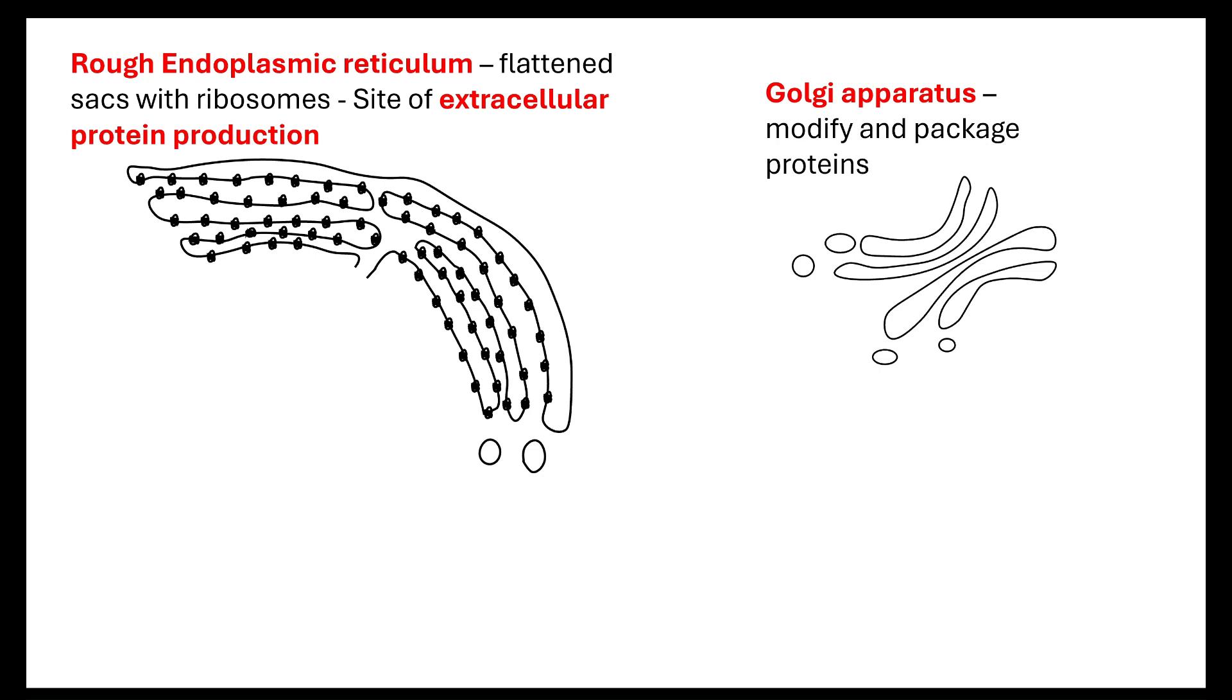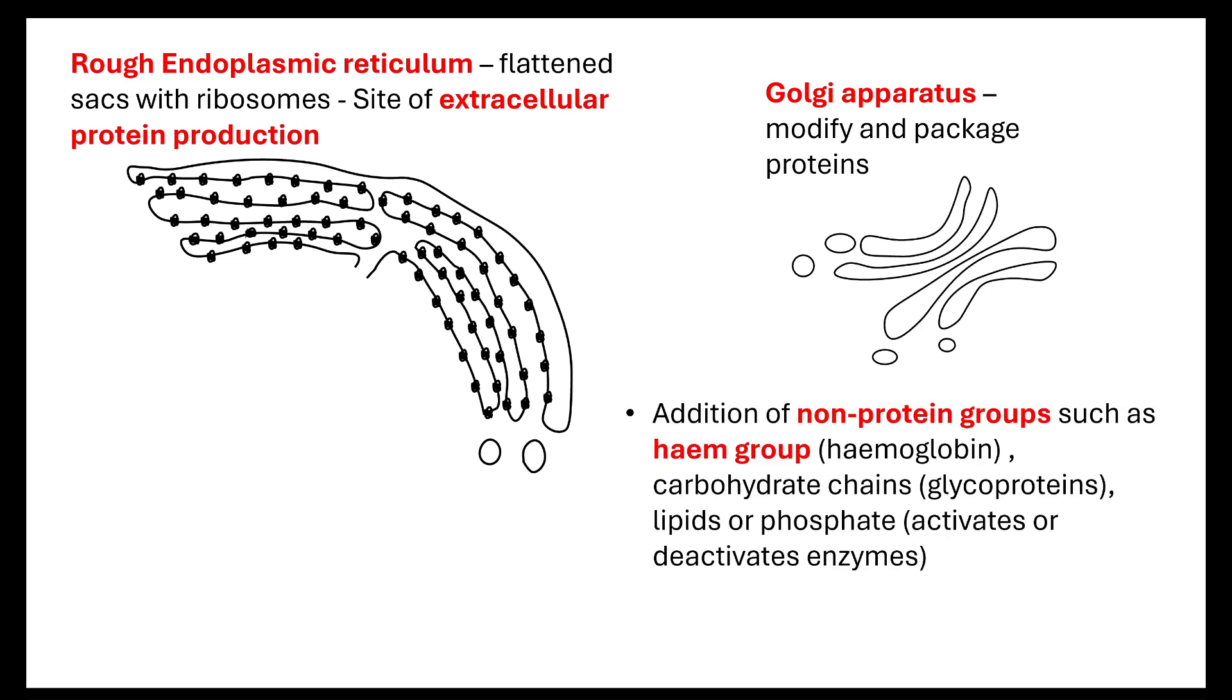When it gets to the Golgi apparatus, it will then be modified and packaged. What does that mean, that modification and packaging? Well, remember we said it's going to start to fold into its secondary and then tertiary structure. Well, it will continue to be modified in its tertiary structure and then modified into either a conjugated protein and if it's a conjugated protein, we are therefore adding on a non-protein group such as a heme group.